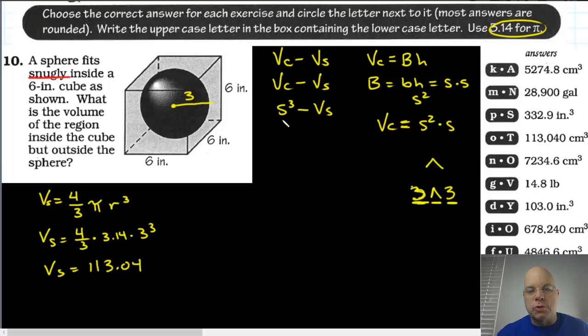So substituting back into this formula, we have side cubed, so 6 cubed minus 113.04. 6 cubed is 36 multiplied by 6, which is 216.